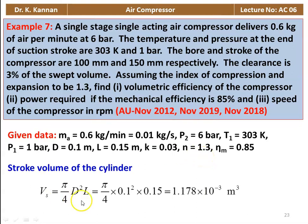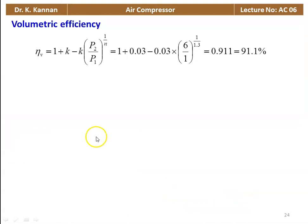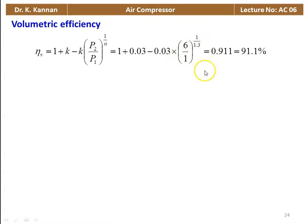We calculate the stroke volume: Vs equal to pi by 4 D squared into L, so pi by 4 into 0.1 squared into 0.15 equals 1.178 times 10 to the power minus 3 meter cube. And we calculate the volumetric efficiency: 1 plus K minus K into (P2 by P1) to the power 1 by n. Substituting: 1 plus 0.03 minus 0.03 into (6 by 1) to the power 1 by 1.3 equals 0.911, which is 91.1%.